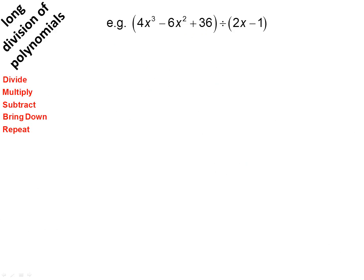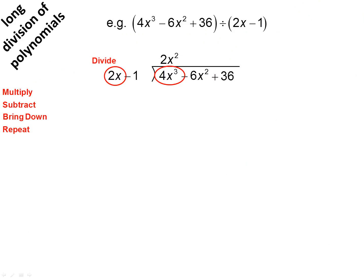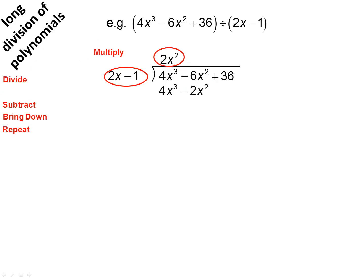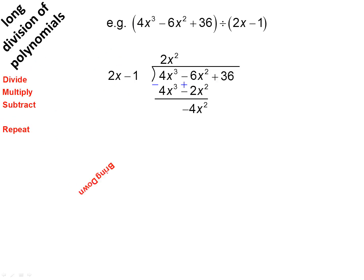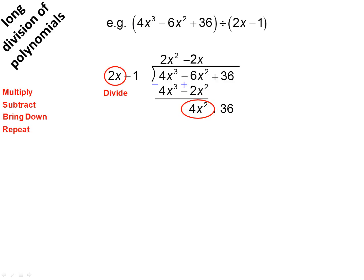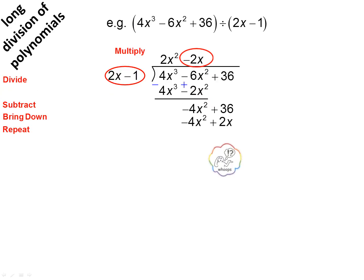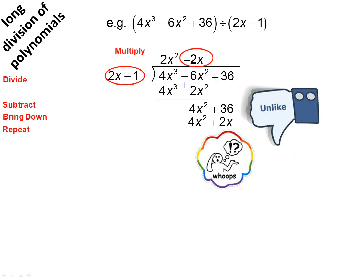Let's have a look at the next one. Now have a look here — x cubed, x squared, there should be an x there, and that's going to give us a snag. We'll divide and get 2x squared, multiply, subtract — change the sign on the bottom line and add — bring down, divide. These are unlike terms, 2x, so we can't do that.